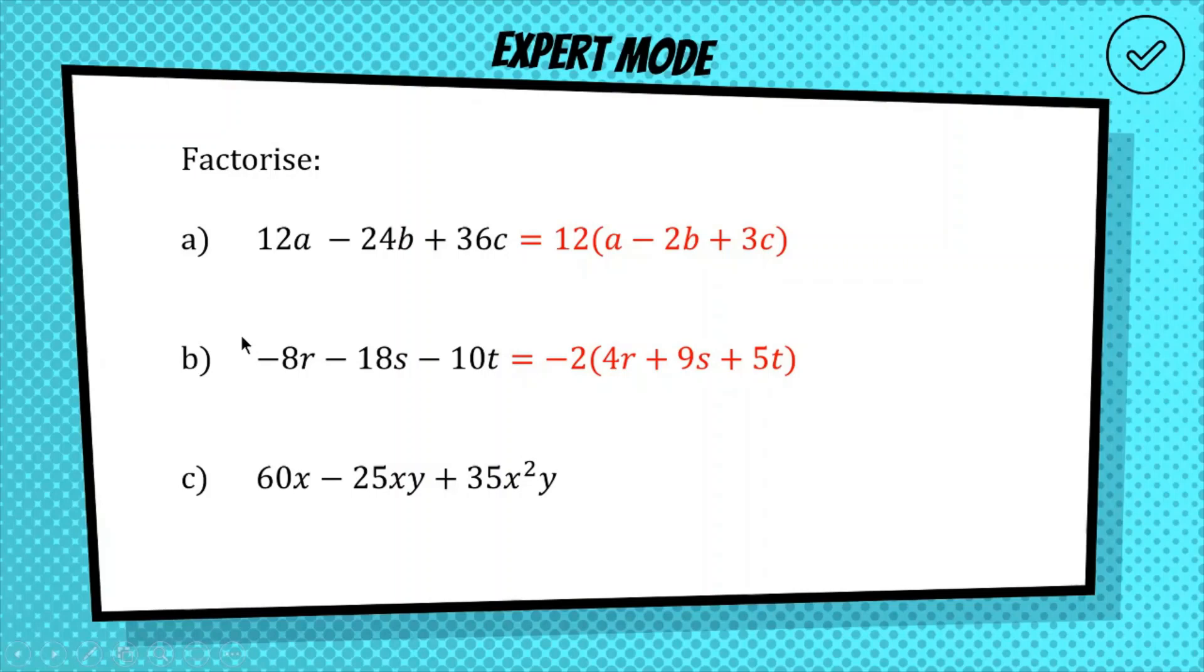All right, and the very last one, the ultimate challenge. We have 60x minus 25xy plus 35x squared y. So if we look at the algebra, we've got x, xy, x squared y. There's a common factor of x in all three. So we can take an x out of the terms. 60, 25, and 35, what's a common factor of all those three? Looks to me like it is 5. So we're going to factor out 5x out of all three terms.